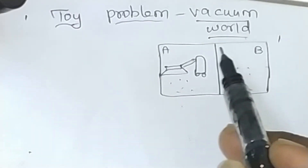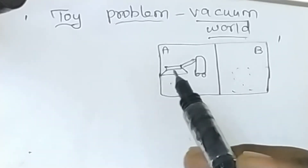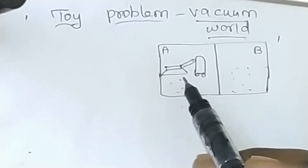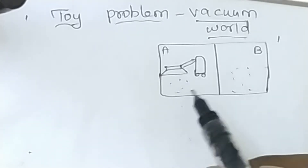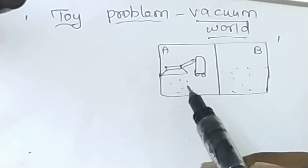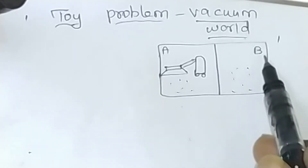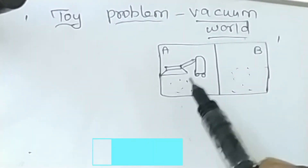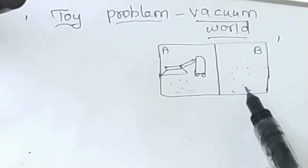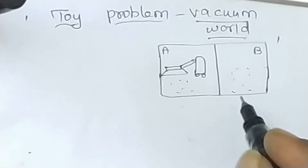We have two squares: A square and B square. A vacuum cleaner is placed in any one of the squares, either A or B. If A square contains some dirt, the vacuum cleaner will clean that dirt. Then the vacuum cleaner has to move to the next square and check whether there is dirt present. If there is dirt, it performs a cleaning action, and the state is changed from one state to another.